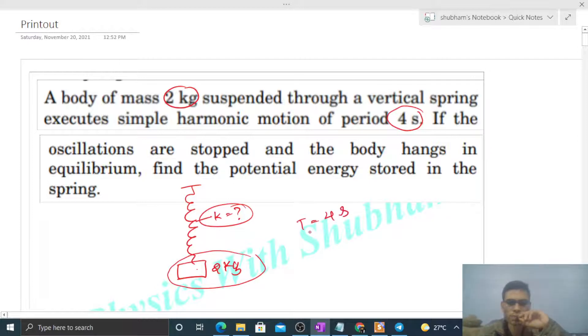What is the time period for this spring-block system? That will be 2π times the square root of m by k, right? So that is your 4 seconds. From here we can calculate the value of k.